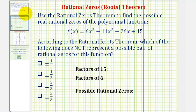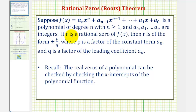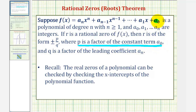The rational zeros theorem tells us that if r is a rational zero of the polynomial function f(x), then r is in the form of plus or minus p divided by q, where p is a factor of the constant term a sub zero, and q is a factor of the leading coefficient a sub n.